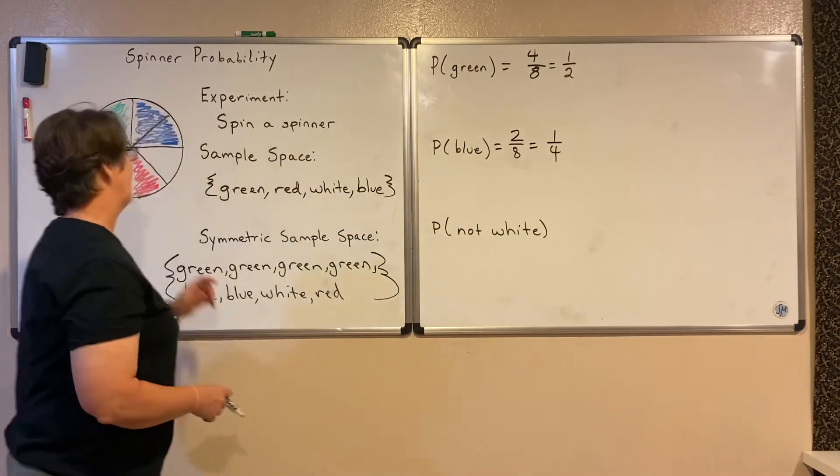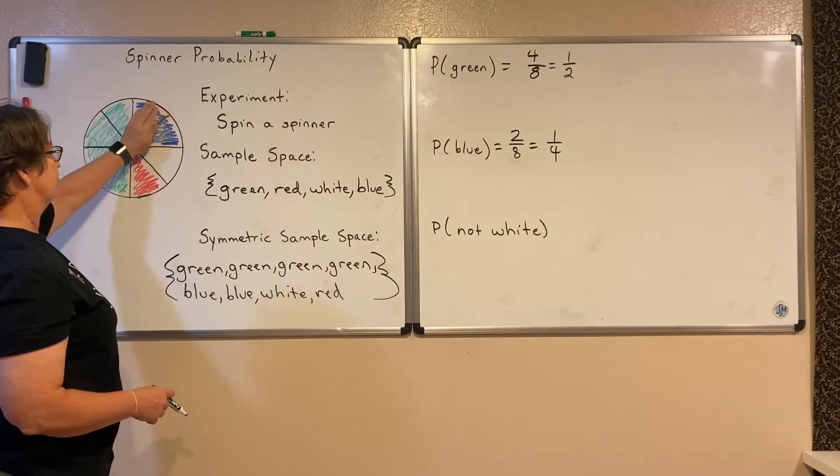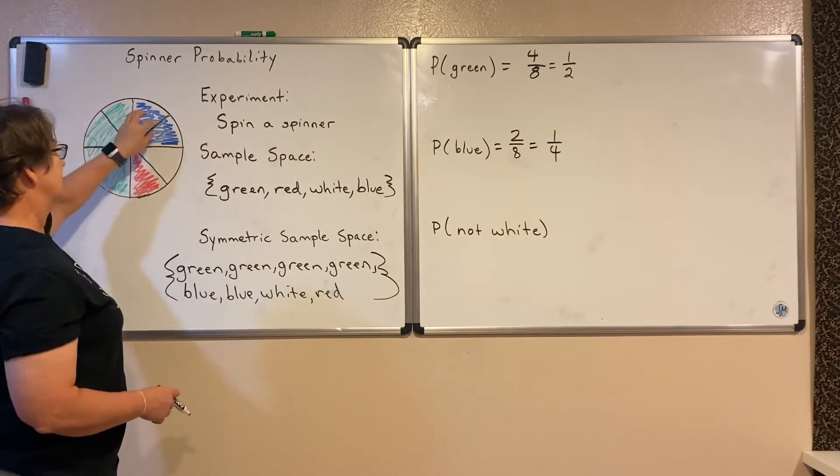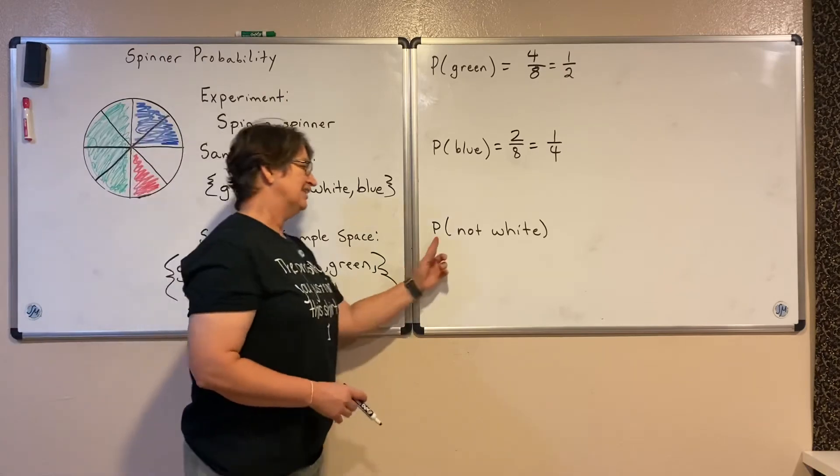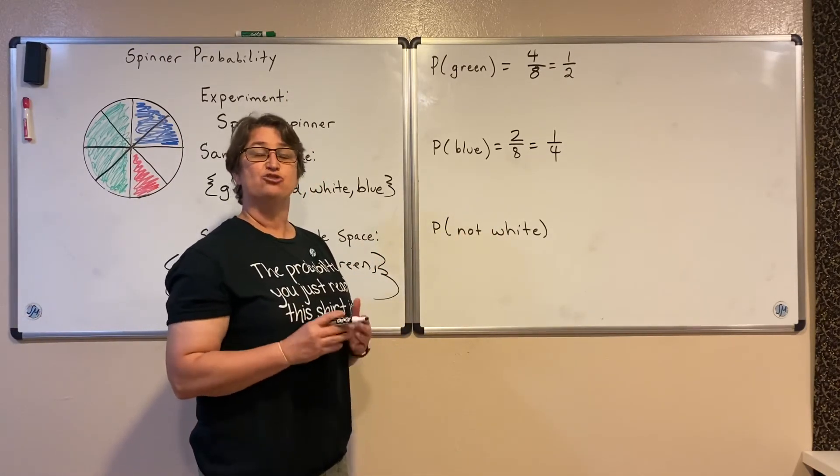Also, you see that the circle, one-fourth of this area of this circle is made up of blue. So therefore, the probability that I hit blue is one-fourth.